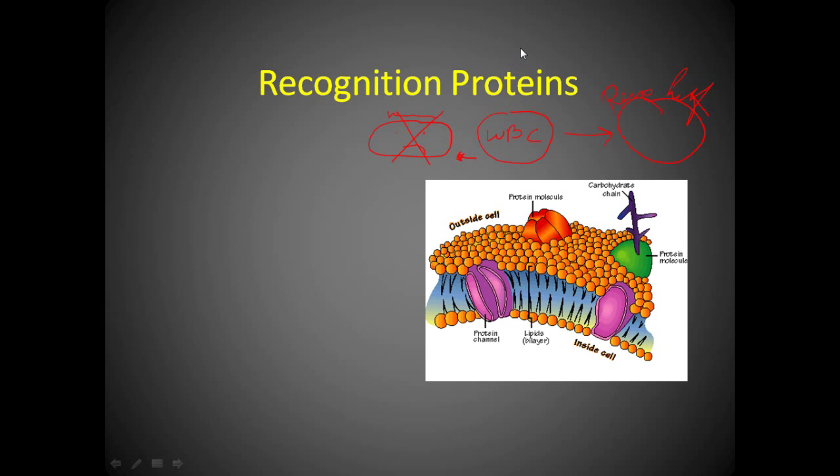These proteins also play a role in organ transplants. If one of you is going to give me a heart because I need it, and let's pretend your name is Dan Miller, you have a unique set of recognition proteins in your cell membrane just like I do. The problem is, my white blood cell, when it comes up to this Dan Miller heart, guess what it's going to do?